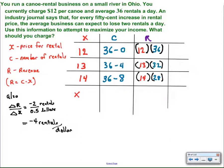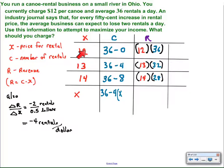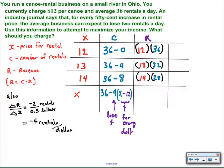At this point we should be able to see a pattern, and this is where algebra translation is handy. X being the price I set, I start with 36 rentals and lose four rentals for every dollar. If we just write 36 minus 4x, that won't work — if x is $12, we'd remove 48 customers from the starting 36. What we have to recognize is: when x was 12, we subtracted zero fours; when price increased one dollar, we subtracted one four; when price increased two dollars, we subtracted two fours. So however many dollars over 12, that tells us how many four-canoe rental losses there will be. We lose four canoe rentals for every dollar more than 12, so x minus 12 represents every dollar more than 12.